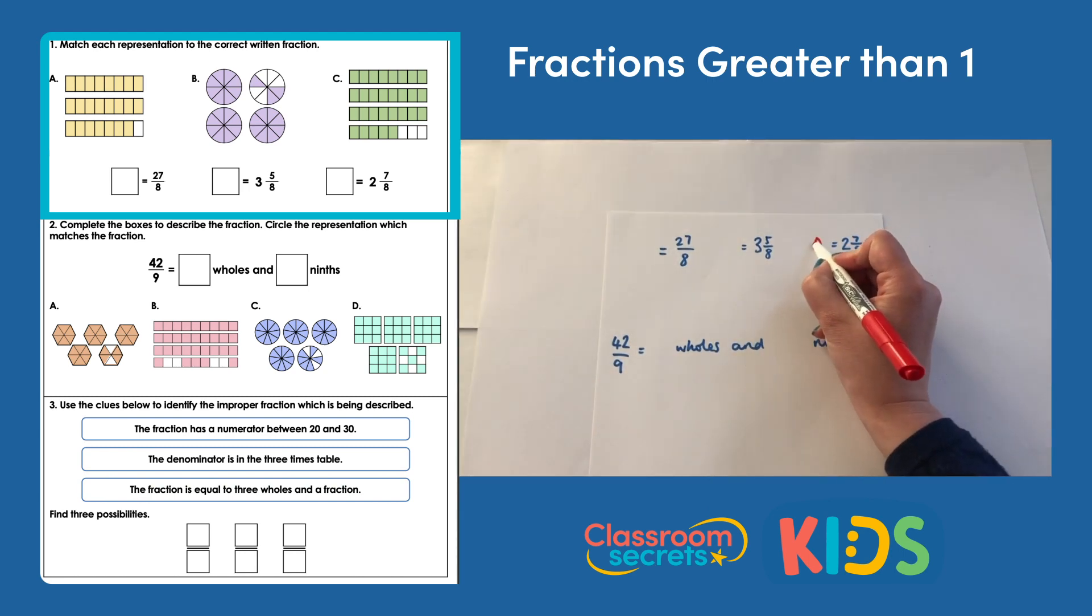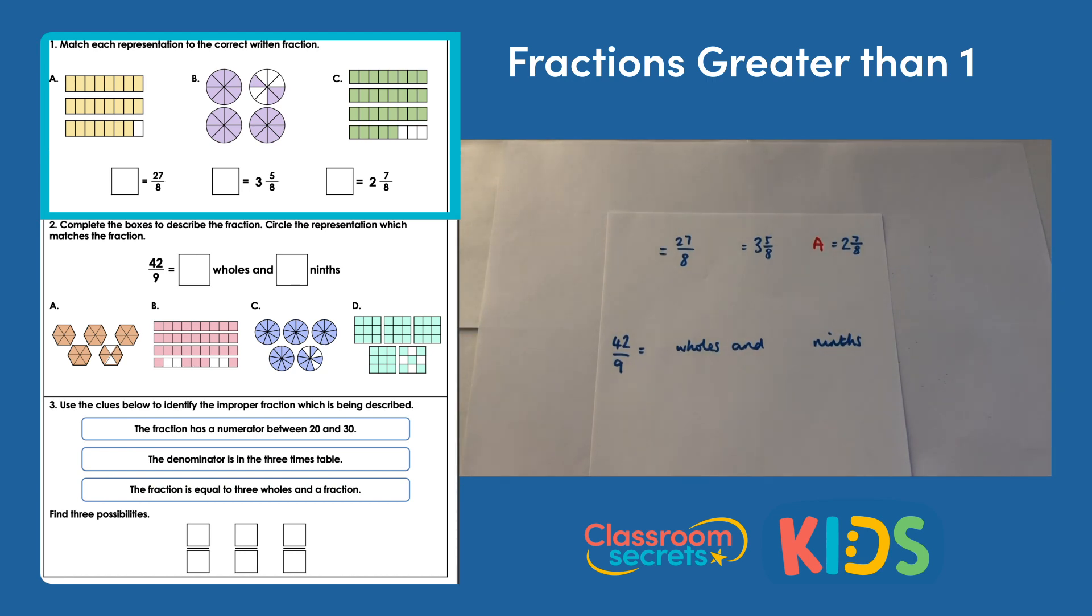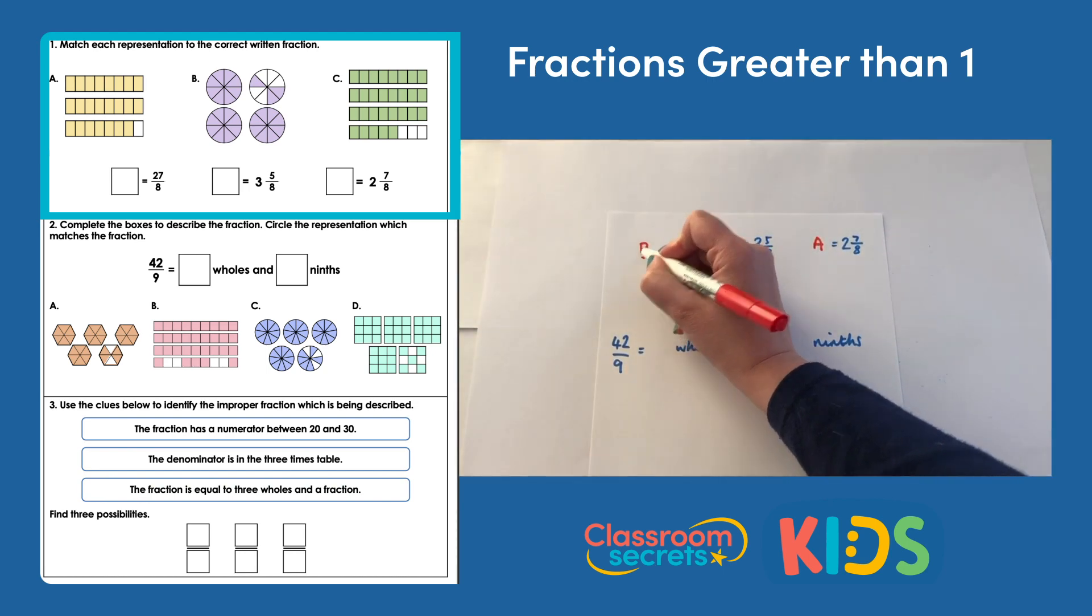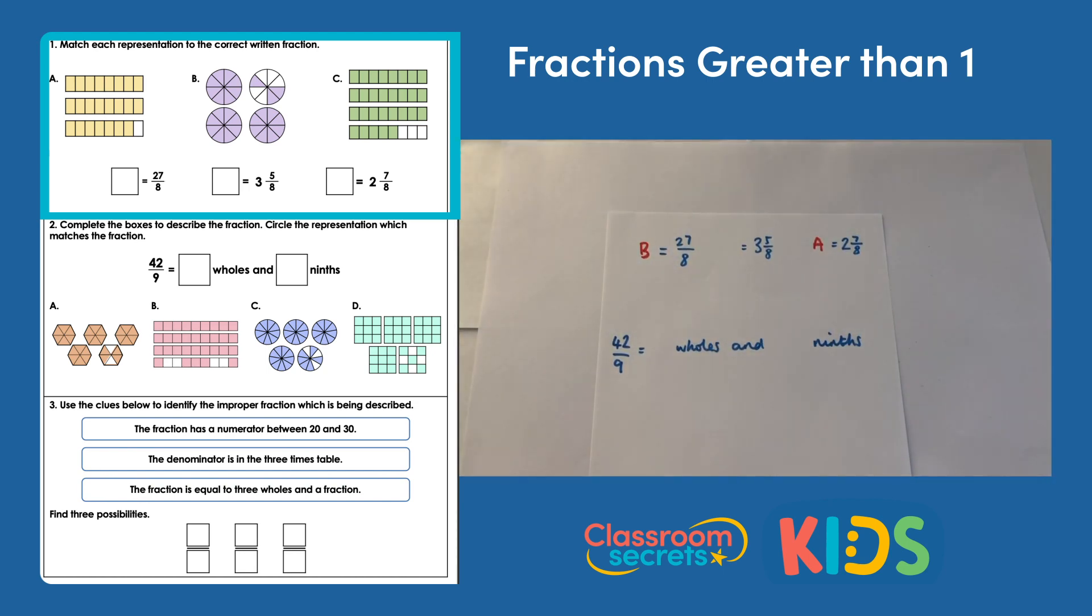B: we have three wholes because there are three circles completely shaded, and then I have three additional eighths, so three and three eighths. Three and three eighths isn't an option, but I wonder if I count the eighths whether I will get to 27. So three times eight is 24, and then my additional three eighths brings me up to 27 eighths. So the first one, 27 eighths, is B.